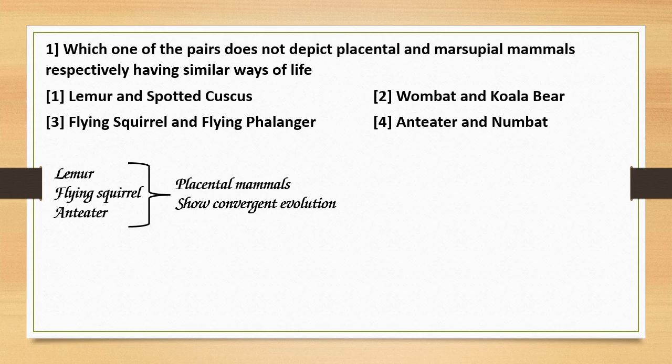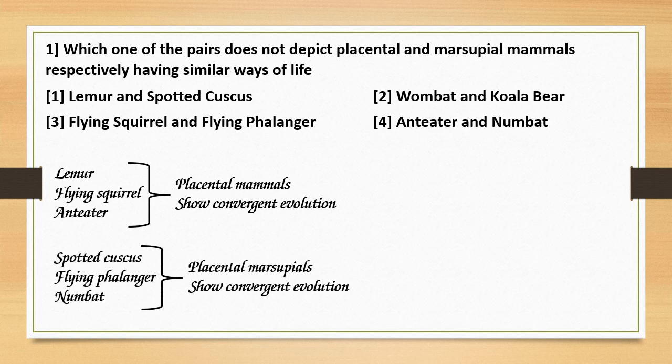Lemur, flying squirrel, and anteater — all three are placental mammals showing convergent evolution. Spotted cuscus, flying phalanger, and numbat — they are marsupials showing convergent evolution. So lemur is a placental mammal and spotted cuscus is a marsupial, but both show convergent evolution. Flying squirrel is a placental mammal and flying phalanger is a marsupial, and both show convergent evolution.